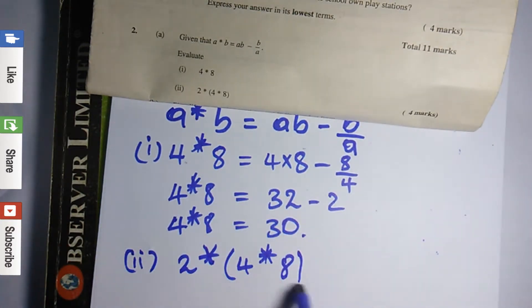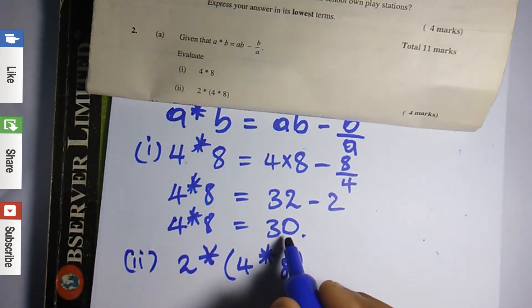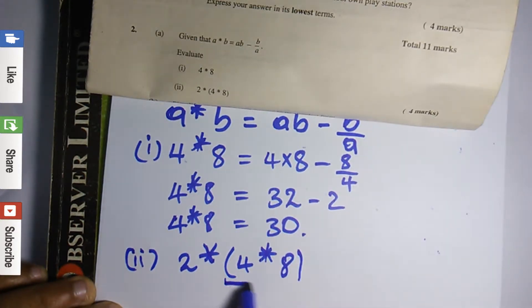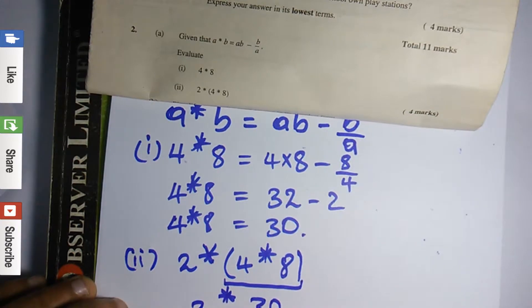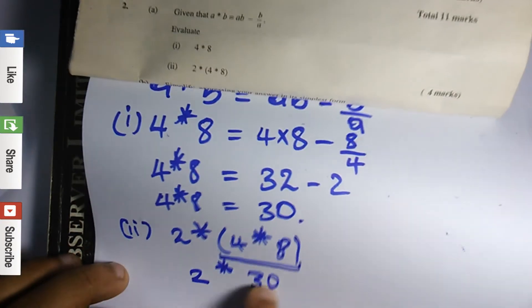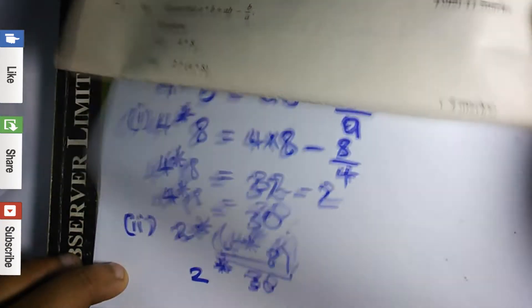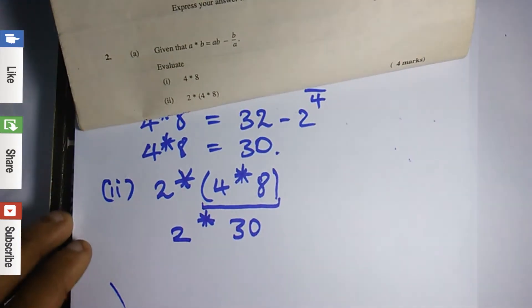If you realize with this question, we have 4 star 8 right here in bracket, so we can replace the 4 star 8 to what it's equal to, which is 30. So right here I'm going to replace the 4 star 8 with 30. I'm going to rewrite the asterisk here and the 2. So if we realize, we have two values which we need to solve for: we need to solve for 2 star 30.